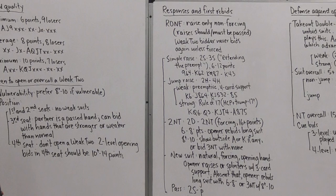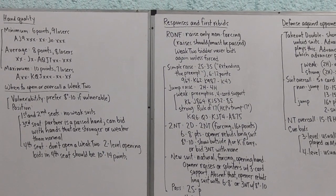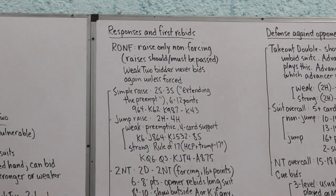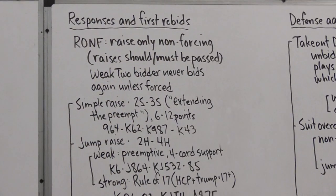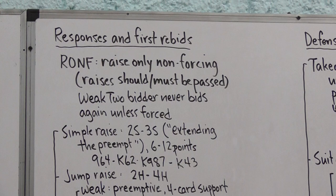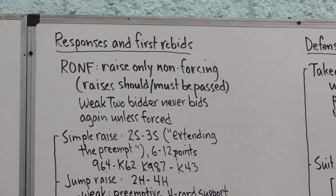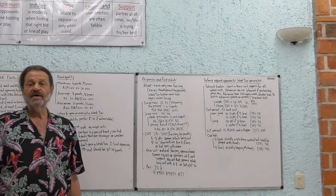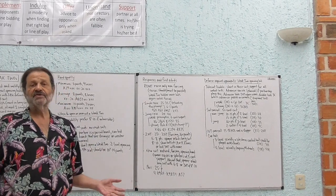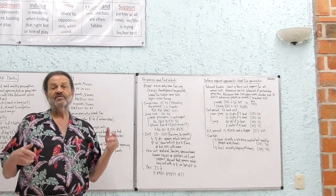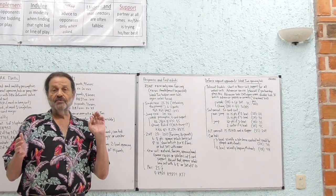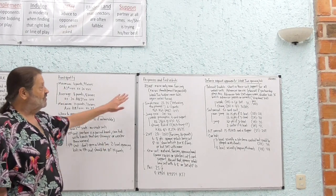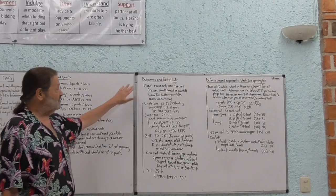Now we're going to look at the weak two bidder's partner's response and the weak two bidder's first rebid. First I want you to look at this abbreviation RONF which stands for raise only non-forcing. This is probably the commonest way to play responses to weak two bids. What that means is that any bid that's not a raise is forcing. So if you make a two heart weak two opening bid, if I bid three hearts that's not forcing, if I bid four hearts that's not forcing, raises are non-forcing.